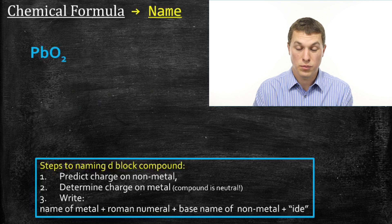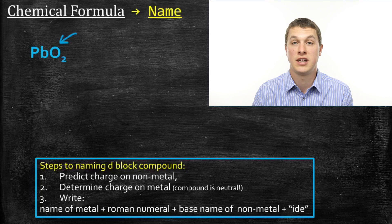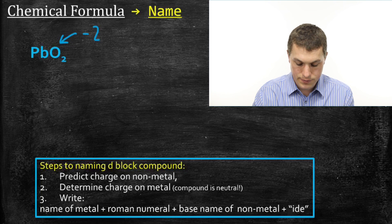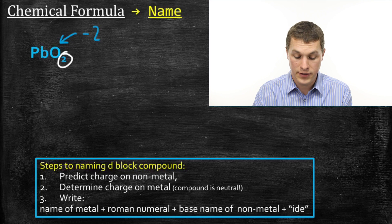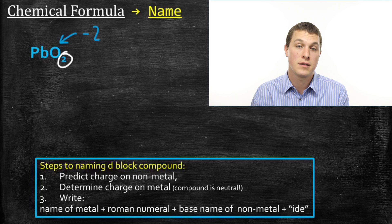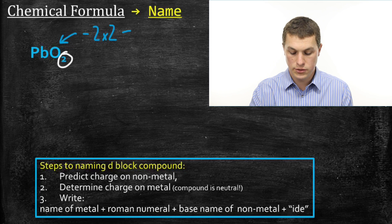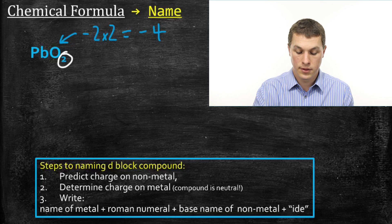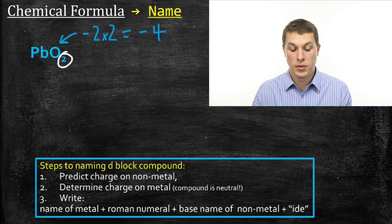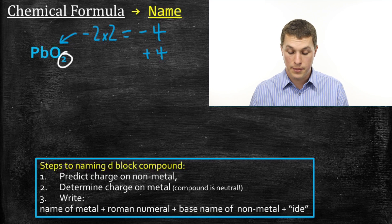Next example is lead oxide — we need to figure out what Roman numeral to use. Step one: determine the charge on the non-metal. Oxygen, based on its position on the periodic table, has a negative two charge. Lead we don't know, so we have to figure it out. Notice that we don't just have one oxygen, but two. The total negative charge is negative two times two, which gives negative four. That means the total positive charge on lead must be equal and opposite: plus four. So we have minus four for oxygen and plus four for lead, giving a neutral compound.